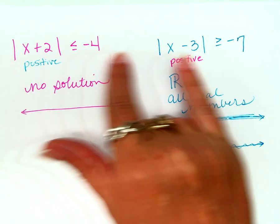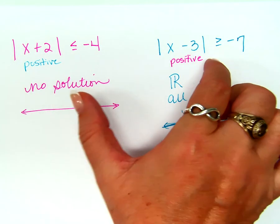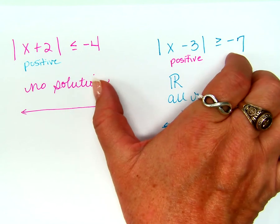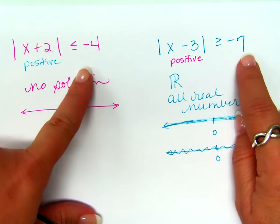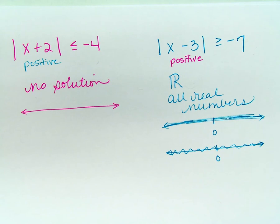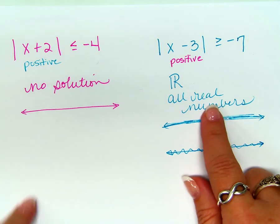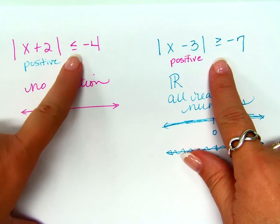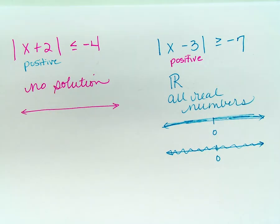Okay? So, anytime you have your absolute value isolated, and then you look at the other side of the equal sign or the inequality, and this number over here is negative, your sensors need to raise up off your head, right? Those little alien sensors you all have. You're going to be like, oh, something's wrong. Something's weird. But please, please, please, don't just write no solution. Okay? Don't just write no solution because it might be all real numbers and not no solution. Depends on which direction the sign goes, doesn't it? Okay? You just need to think your way through it. Are there any questions about that?